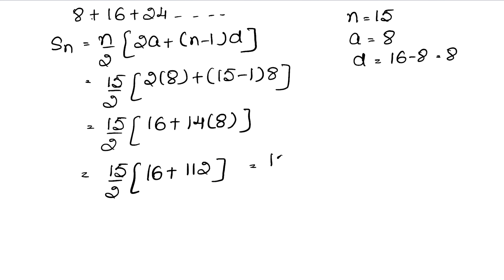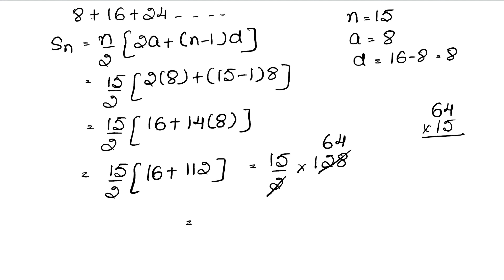Adding 16 and 112 gives 128, so we get 15/2 into 128 = 15 into 64. Now 64×15 = 960. So 960 is the answer. We now know the sum of the first 15 multiples of 8 is 960.